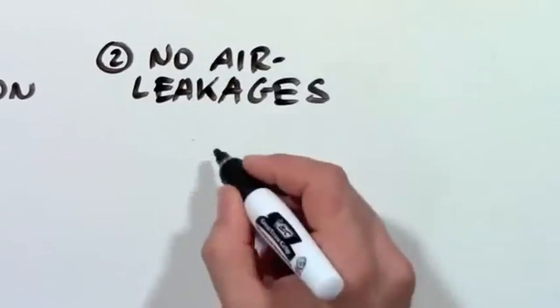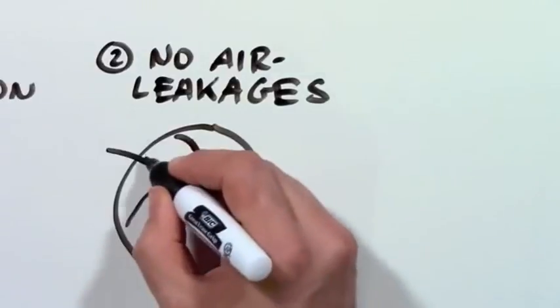2. No air leakages. There should be no holes, small or large, to let hot air out of the house.